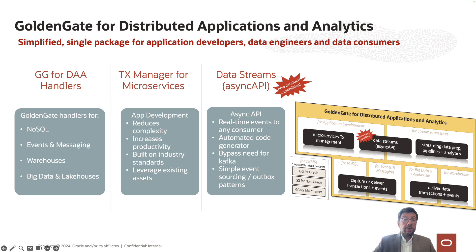You can also capture change data from NoSQL data stores and from message streaming platforms. Using GoldenGate data streams, you can create Async API pub/sub channels to make change data available in JSON format for your developers. In this session, we will focus on real-time data ingestion to Databricks data lakes.